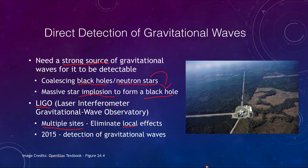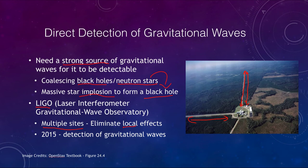What LIGO does is use very long arms to measure variations in their length. A laser signal is sent down and back across each arm multiple times, then split in two different directions. Those signals are combined together and we look for minute changes in the path length that the light had to travel, which would be caused by passing gravitational waves. The shifts we're looking for are incredibly tiny — less than atomic size — while the paths themselves are kilometers long.